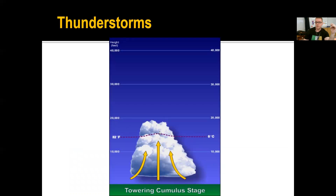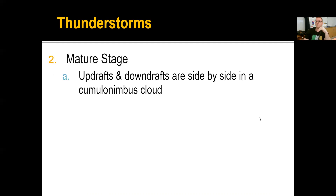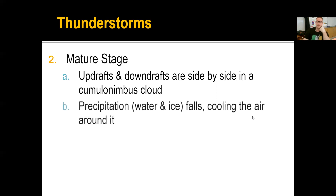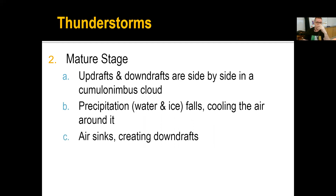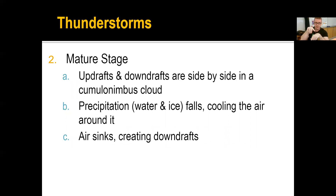Next is the mature stage, where you have updrafts and downdrafts side by side in a cumulonimbus cloud — wind going up very quickly and wind going down very quickly within the same cloud. You can have precipitation falling, which could be a combination of water and ice if hail is present. That cools the air around it, creating sinking and downdrafts. In thunderstorms, that warm air from Earth's radiating heat or from warm moisture forced up by a cold front feeds into one portion, and as it rains it cools that air and creates sinking — internal convection within the clouds.